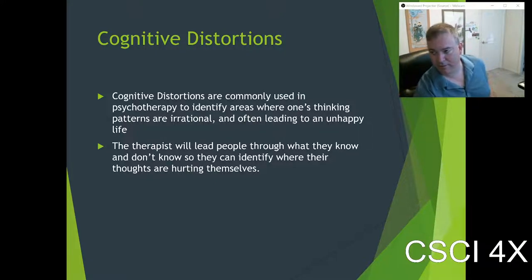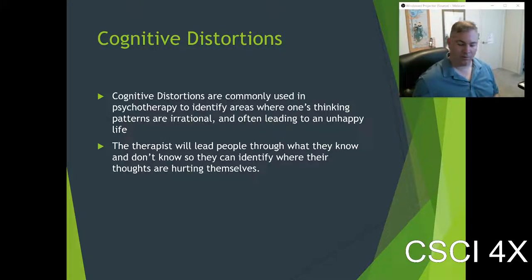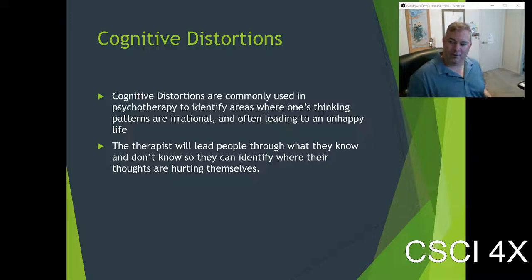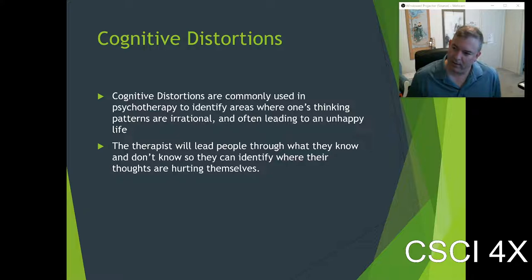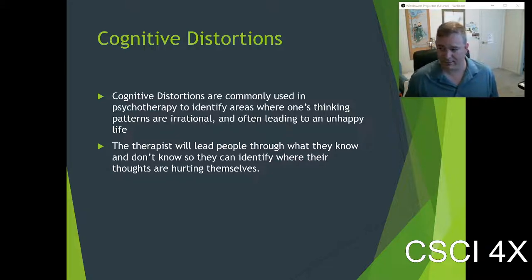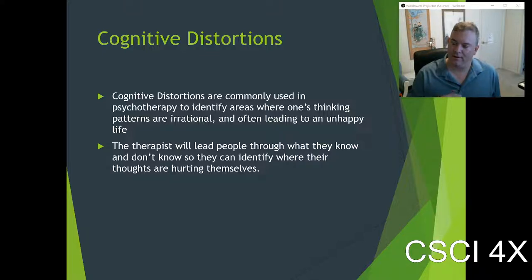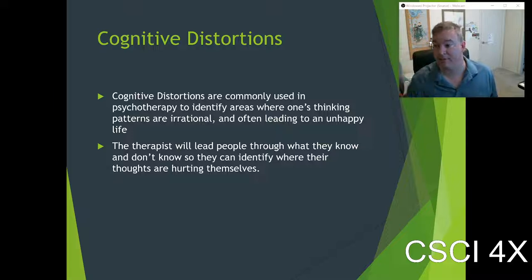Welcome everybody to the final day of week eight. We're going to be hopefully finishing up our diversion into fallacies and cognitive biases today. Fallacies are bad arguments, and cognitive biases are the flaws, weaknesses, or shortcuts the brain takes that often lead to fallacious thinking.